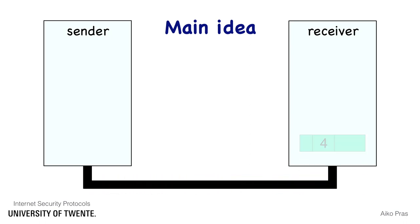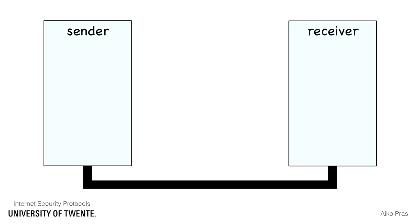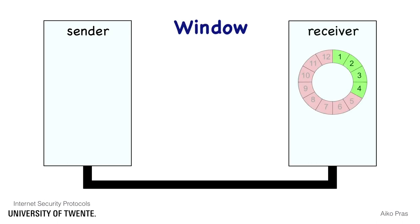Since packets may arrive out of order, the receiver maintains a window of acceptable sequence numbers. The window is generally chosen to be 32 or 64 packets, although the receiver may decide to use a larger window. For simplicity, we will use in this video a receive window of 4 packets and sequence numbers between 1 and 12.